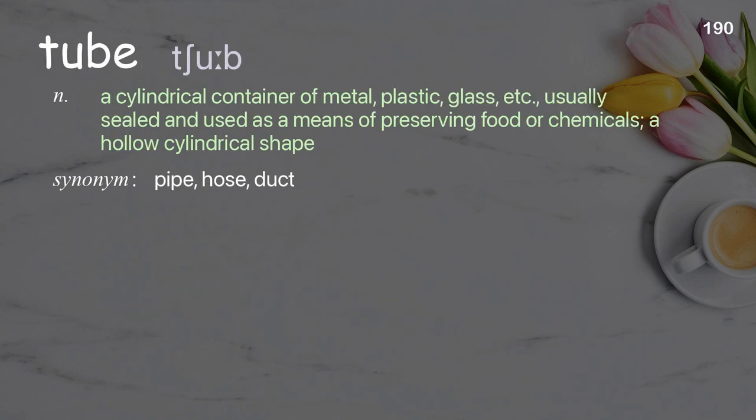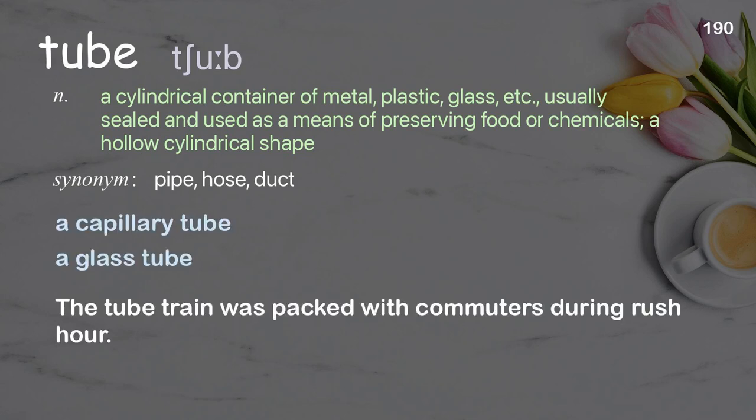Tube: a cylindrical container of metal, plastic, glass, etc., usually sealed and used as a means of preserving food or chemicals; a hollow cylindrical shape. Examples: a capillary tube, a glass tube. The tube train was packed with commuters during rush hour.